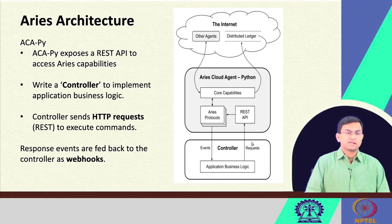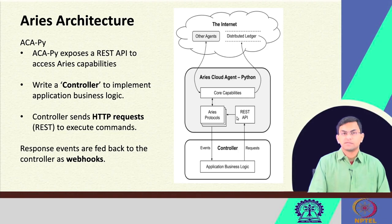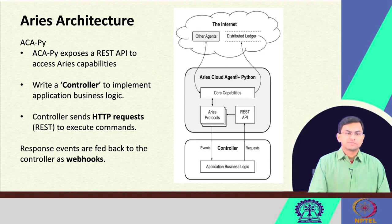Let us take a look at the overall architecture of Hyperledger Aries — this is very specific to the ACA-PY implementation. From this diagram you can see that ACA-PY has three broad types of modules: the core capabilities, the Aries protocols, and the REST API module. The Aries Cloud Agent Python communicates with components on the internet. The core capabilities communicate with a distributed ledger, which is the verifiable data registry — it can be Hyperledger Indy or any other implementation like Sidetree.